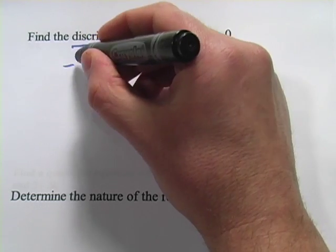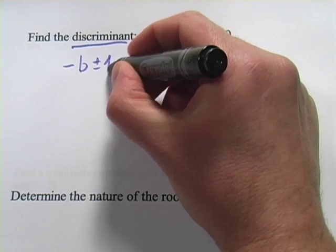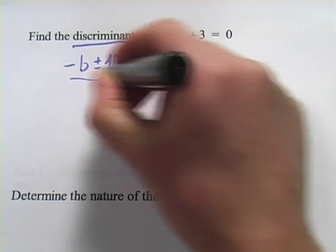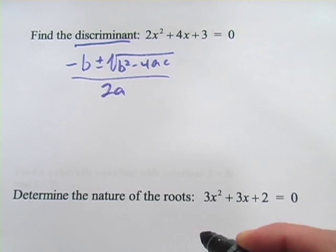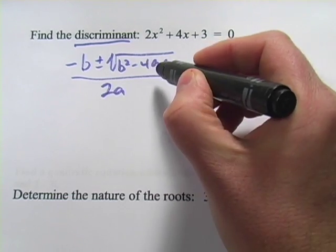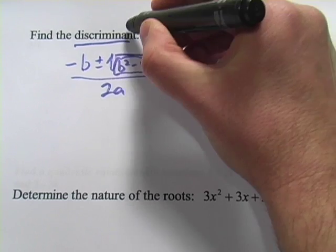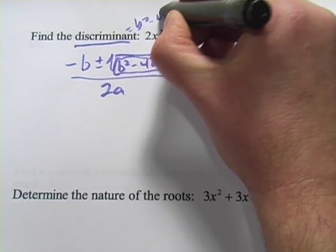Remember the quadratic equation is negative b plus or minus the square root of b squared minus 4ac over 2a. The discriminant is this chunk underneath the square root sign. So the discriminant is actually b squared minus 4ac.